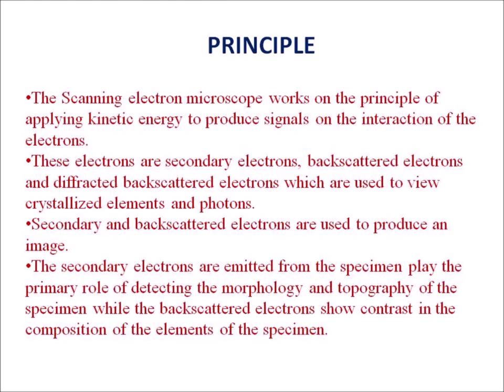When we examine the principle of scanning electron microscope, it applies kinetic energy to produce signals on the interaction of electrons. These electrons are called secondary electrons, backscattered electrons, and diffracted backscattered electrons, and are used to view crystallized elements and photons. Secondary and backscattered electrons are used to produce an image. Secondary electrons emitted from the specimen play the primary role of detecting the morphology and topography of the specimen, while backscattered electrons show contrast in the composition of the elements of the specimen.